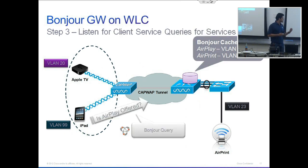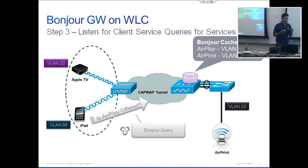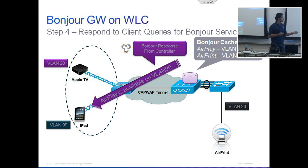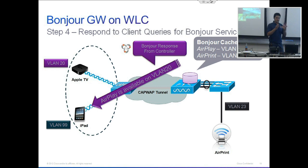Now let's say an iPad on VLAN 99 comes on the network. It sends a Bonjour pointer record asking for what services are offered. There are no services on VLAN 99, but the controller knows about all the services on the overall network. So the controller will say: there is AirPlay available on VLAN 20, and you can access this service. Once the iPad knows what's available and gets the IP address, it can make use of this service across VLANs. That's essentially the goal of the gateway — the controller acts as a services directory.